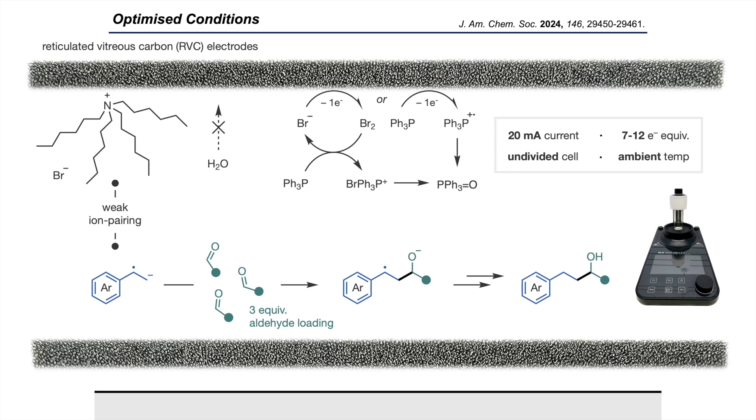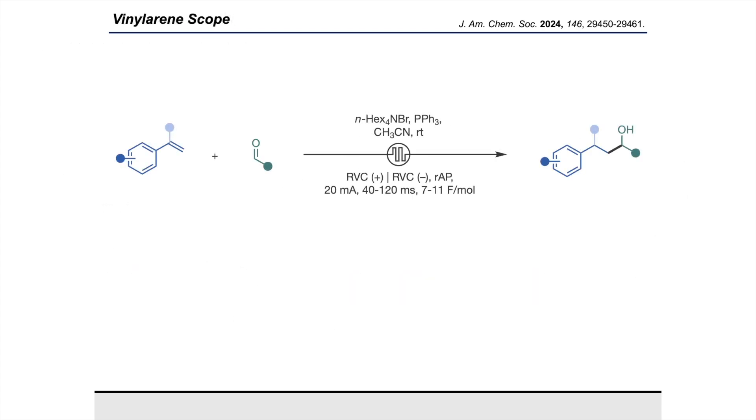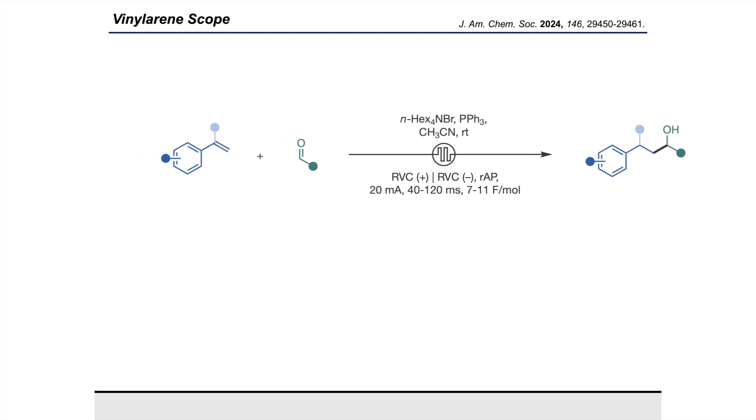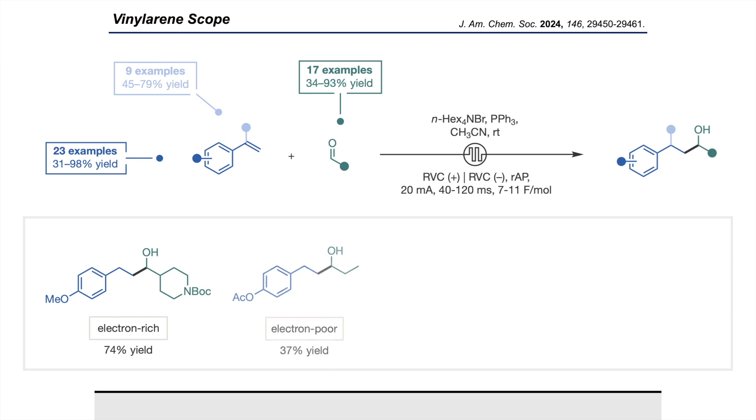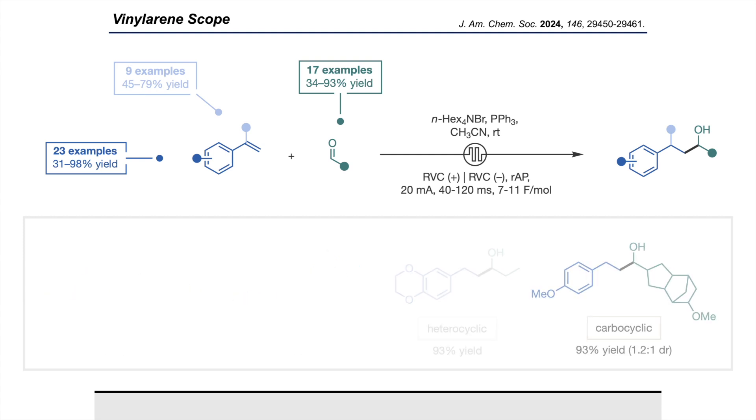Here's the reaction drawn out as a scheme. We showed the generality of this reaction across 23 variations to the ring, nine substitutions to the benzylic position, and 17 variants of alkyl aldehyde. In particular, we showed compatibility with both electron-rich and electron-poor olefins, but with a substantial preference for electron-rich ones, as well as heterocyclic and carbocyclic motifs, steric bulk at the benzylic position, redox-active elements like sulfur.